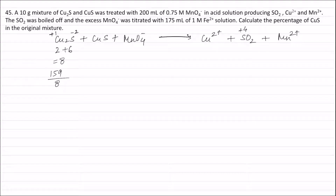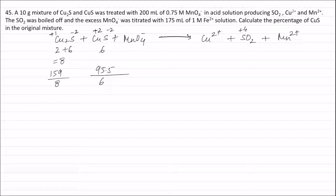In CuS, the oxidation number of copper is +2 and sulfur is −2. There is no change in oxidation number of copper. The change in oxidation number of sulfur is from −2 to +4, a change of 6. Therefore, the equivalent weight of CuS is its molecular weight (95.5) divided by 6.